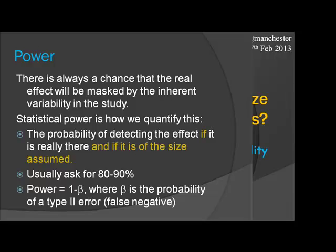Statistical power is the chance that a real effect will be detected given background variability. It's the probability of detecting the effect if it's really there and if it's the size assumed.